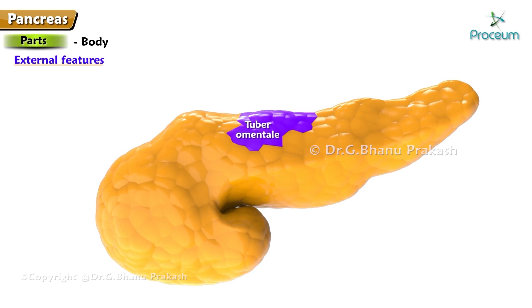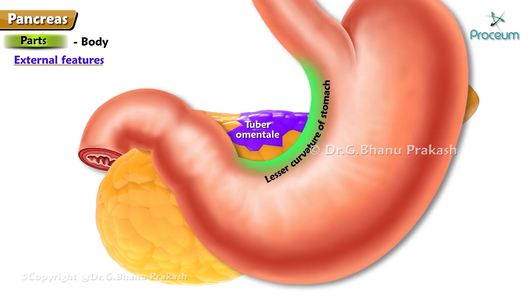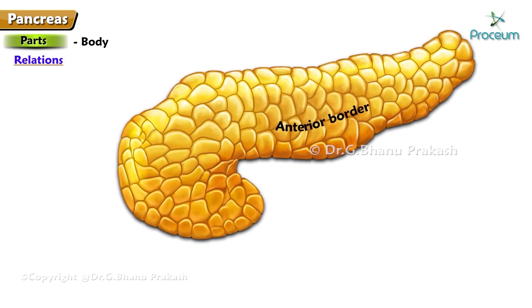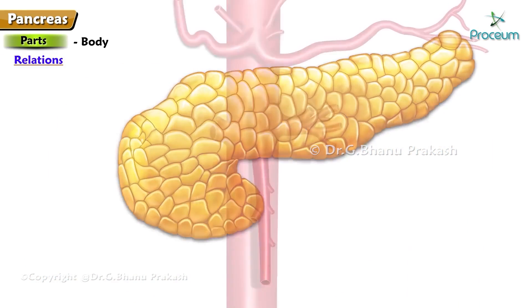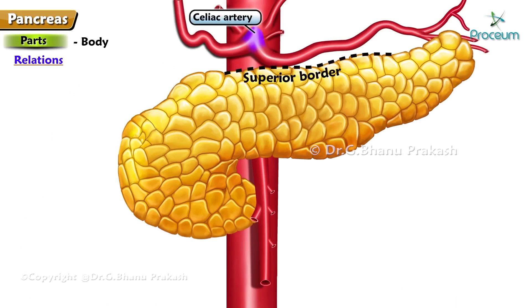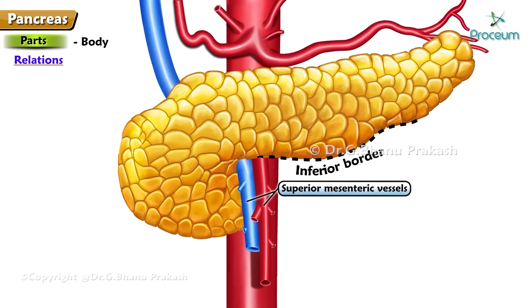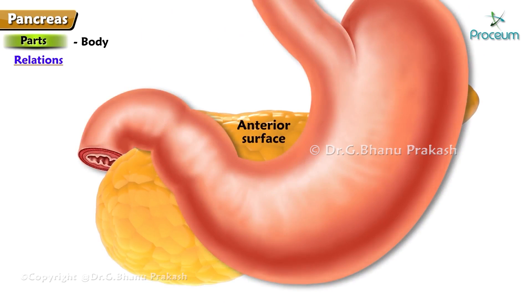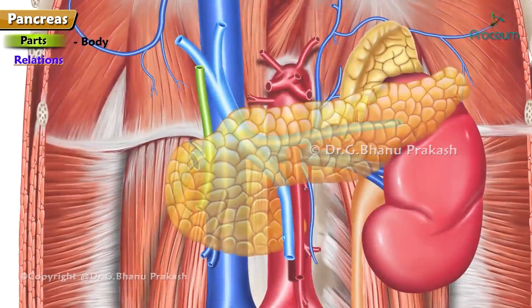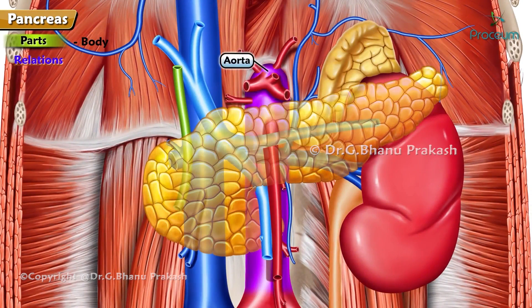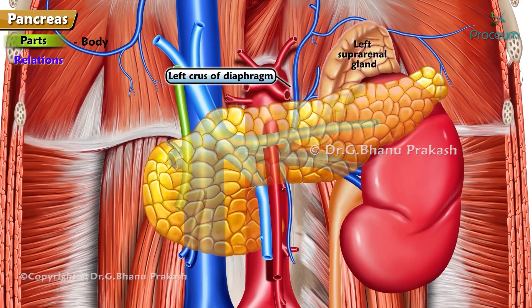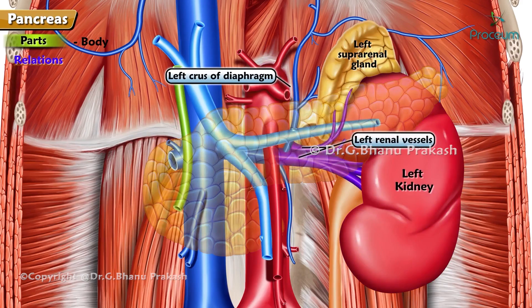The tuber omentale is a projection from the part of the body above the lesser curvature of the stomach. The anterior border provides attachment to the root of the transverse mesocolon. The superior border is related to the celiac artery above the tuber omentale, hepatic artery to the right, and splenic artery to the left. The inferior border is related to the superior mesenteric vessels. The anterior surface is concave and related to the lesser sac and stomach. The posterior surface, devoid of peritoneum, is related to the aorta, origin of the superior mesenteric artery, left crus of the diaphragm, left suprarenal gland, left kidney, left renal vessels, and splenic vein.